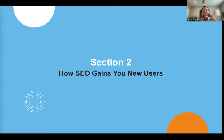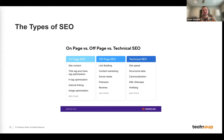Jumping into section two: how SEO helps you gain new users. SEO is typically broken into three main sections: on-page SEO, off-page SEO, and technical SEO. Today we'll focus on on-page and technical SEO because those are about your website. Off-page SEO typically involves social media and backlinking, so we'll shy away from that in today's discussion.